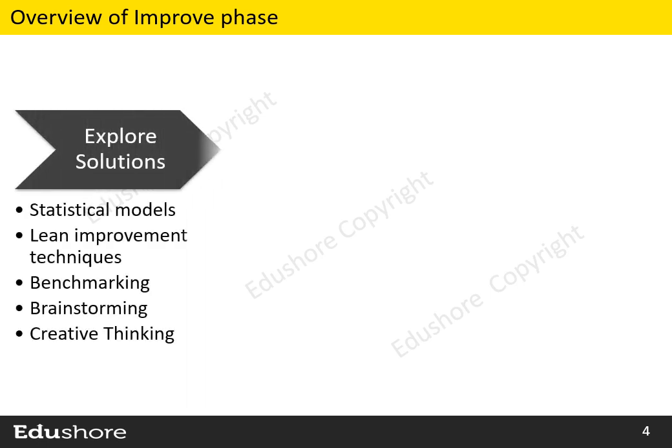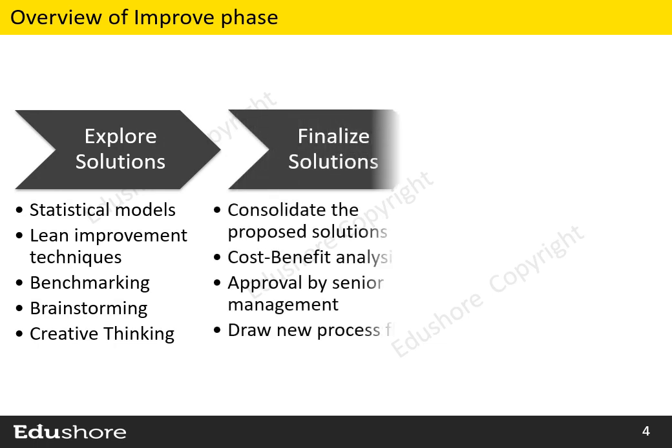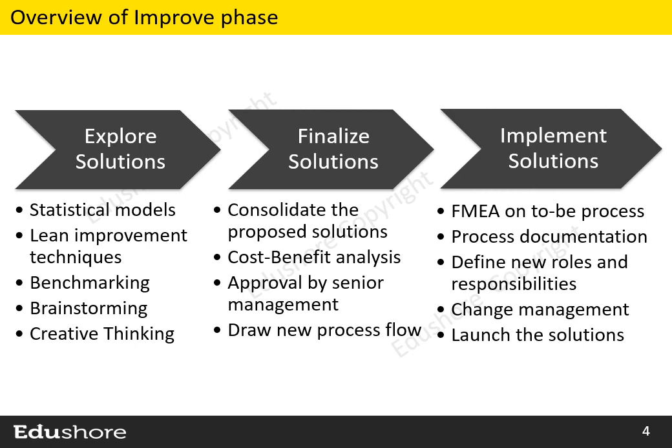In the Improve Phase of a Lean Six Sigma project, we do three broad categories of activities. First, we explore solutions for all the root causes by using various techniques. Next, we finalize the solutions by following a structured approach. And finally, we implement the solutions by doing some specific activities to make sure the solutions are effective.